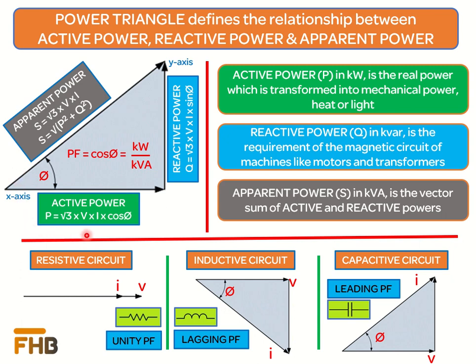The x-axis of the power triangle represents the active power, which is measured in watts or kilowatts, and is the real power which is transformed into mechanical power, heat, or light at the load end. The y-axis represents the reactive power, which is measured in VAR or kilovar, and is the part of electricity that helps in sustaining the magnetic fields required by AC equipment such as motors and transformers. Reactive power is also called the imaginary power, as it is not real power converted into work and is generated when voltage and current are out of phase with each other.